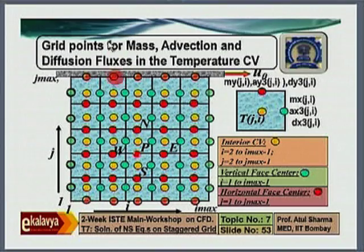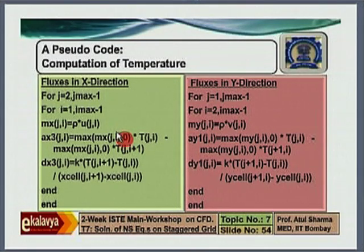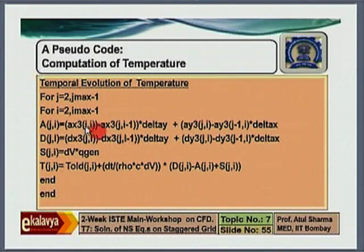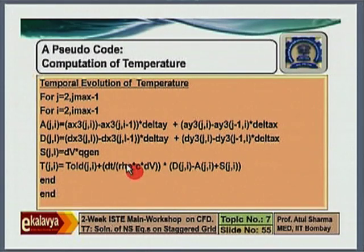For temperature, I have shown you the grid points at the cell center and face centers. This is to calculate the mass flux, enthalpy flux, and conduction heat flux in the x and y directions — the pseudo code. This is to balance the net enthalpy lost by the fluid in the control volume, total heat gain by conduction, and total heat gain by volumetric heat generation. This is the total heat gain; you multiply by dt divided by rho Cp times volume, you get some temperature, which you add with the temperature of the previous time step and obtain the temperature of the new time step.